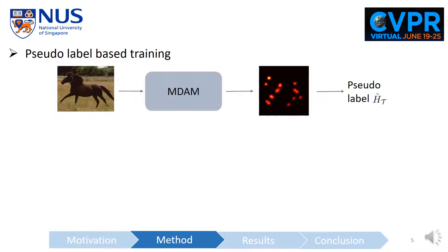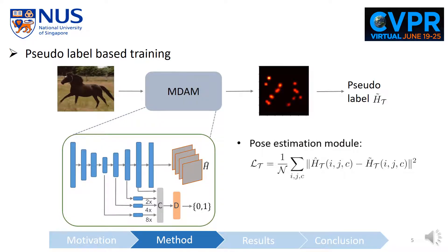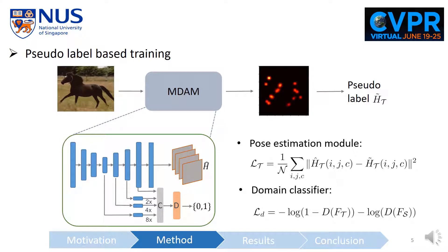This is the backbone of our work, which is a multi-scale domain adaptation module (MDAM). It consists of a pose estimation module and a domain classifier. The pose estimation module is supervised with the pseudo labels, and the domain classifier is used to reduce the domain gap between the synthetic and real images.